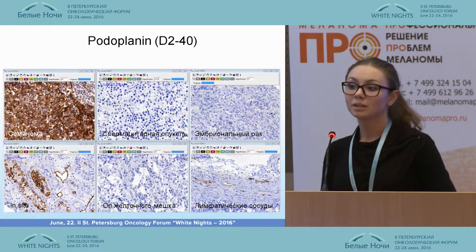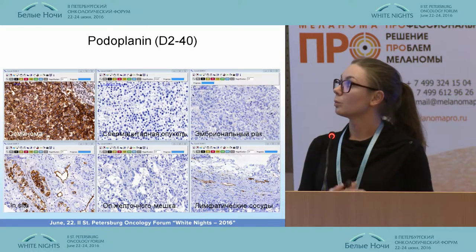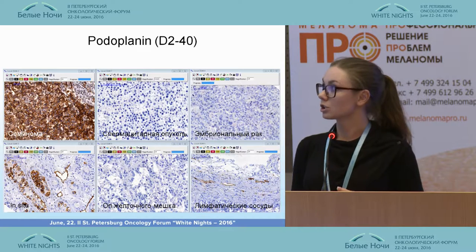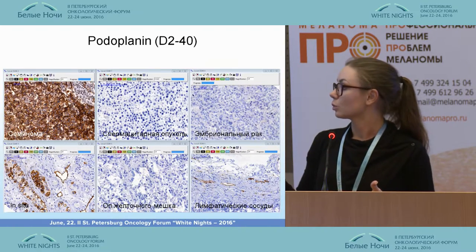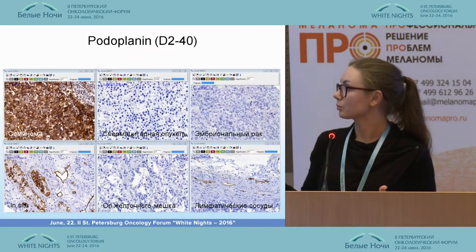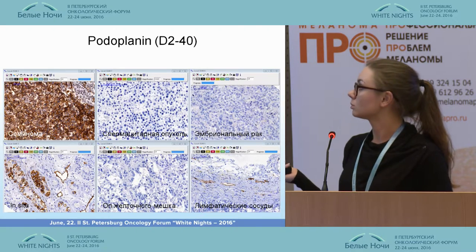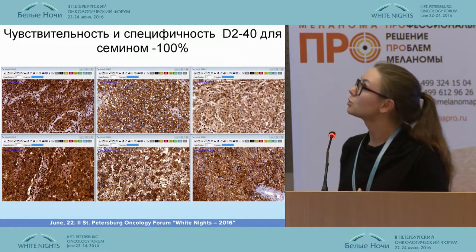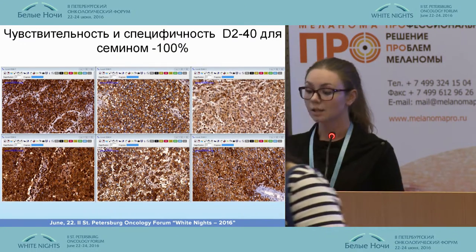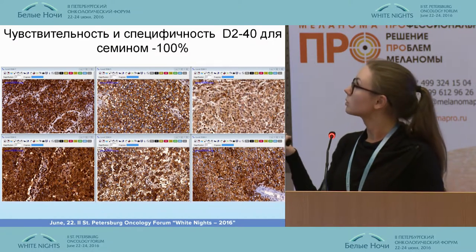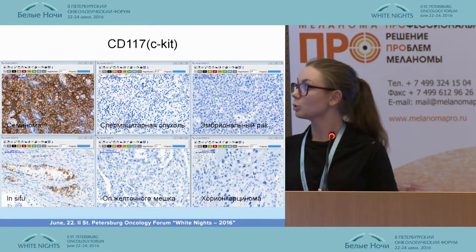Podoplanin (D240) is the most interesting marker for studying seminomas. With positive expression, membrane coloring is observed only in the cells of seminoma and intratubular neoplasia. In all other germ cell tumors it can only be expressed in lymphatic vessels. In our work, both specificity and sensitivity amounted to 100 percent, with very intensive and bright coloring.